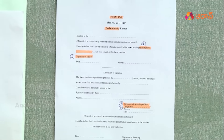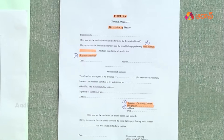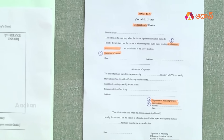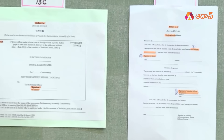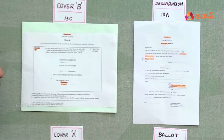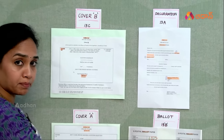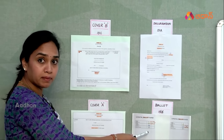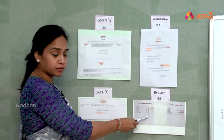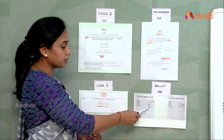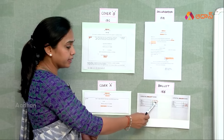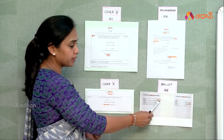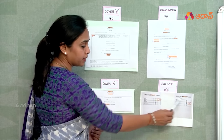Then we are going to give the serial number. Next, we have a ballot paper. This is the ballot paper. If you want to mark the voter, use a check mark or cross mark.